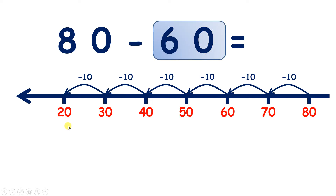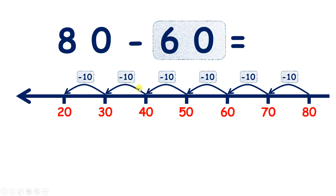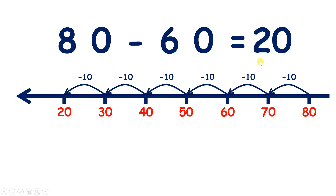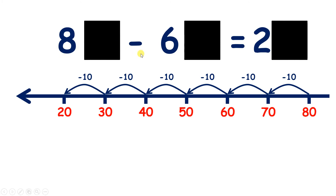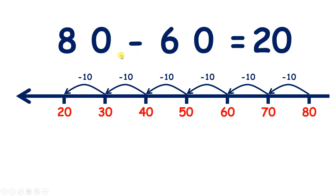So we've subtracted 60, because we've counted back in tens six times. So 80 take away 60 is 20. But we don't really need a number line to work this out. How could you subtract 60 from 80 mentally? Well, if you know that 8 minus 6 is 2, then you know that 80 take away 60 is 20.